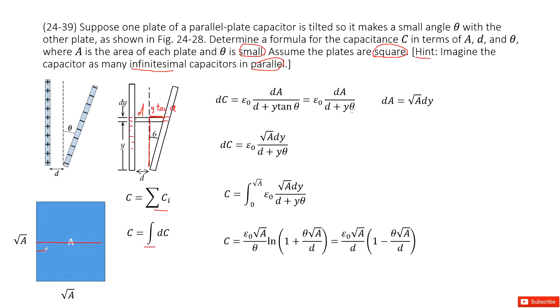As we talked about, the one side length is dy. Another side length is square root of A. So there, dA is just square root of A times dy. Agree? Yes.